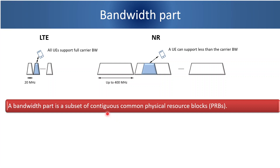In LTE, the bandwidth part was not supported. All user equipments were required to support the full carrier bandwidth. In 4G, the carrier bandwidth up to 20 MHz was possible, so all user equipment had to support the entire 20 MHz bandwidth.